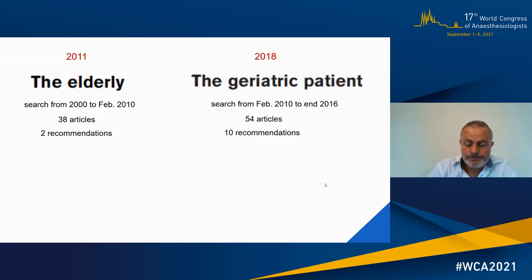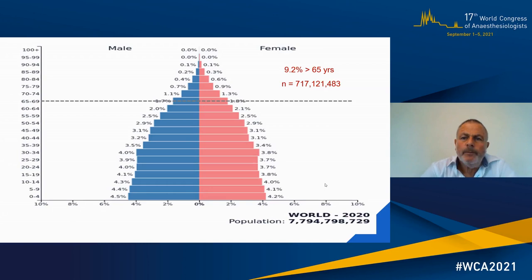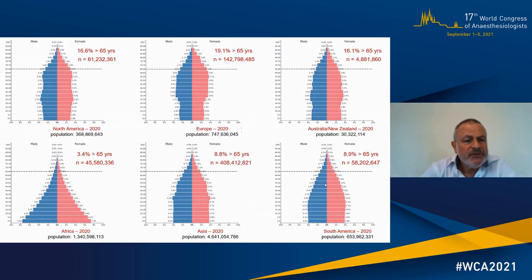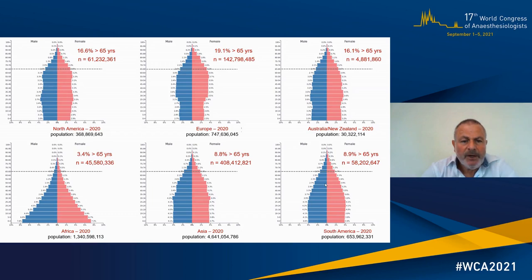Why is it important to look specifically at the geriatric population? This slide shows you the actual situation in 2020, looking at the age distribution all over the world. More than 9% are nowadays over the age of 65 years. There are some differences in age distribution between continents. In North America, Europe, and Australia/New Zealand, the ratio of patients aged 65 years ranges between 16 and almost 20%, whereas for Africa, Asia, and South America, this is still below 10%.